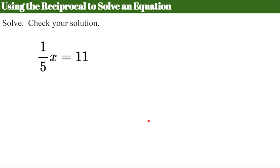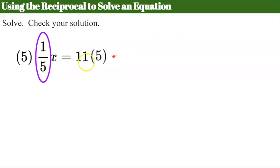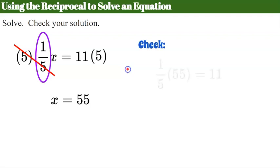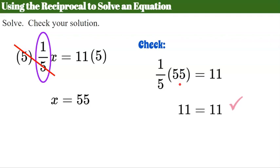We're going to use that idea to solve this equation. Instead of dividing by 1 fifth, I'm going to multiply both sides by the reciprocal, which is 5. Five times 1 fifth is 1, leaving x equals 55. Checking: replace x with 55. One fifth of 55 — multiplying by 1 fifth is the same as dividing by 5 — gives 11, and it checks.